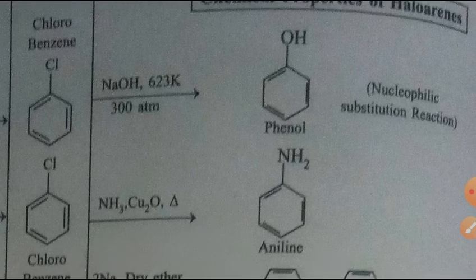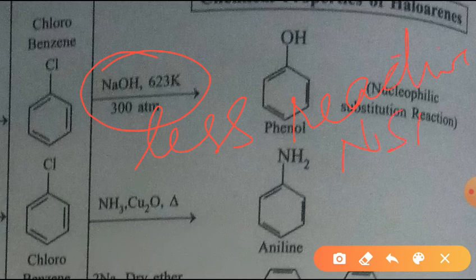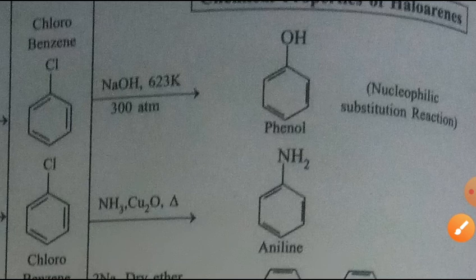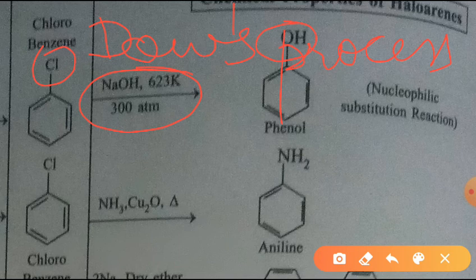Chlorobenzene can undergo nucleophilic substitution reaction but only under drastic conditions. Since chlorobenzene is less reactive toward nucleophilic substitution, due to the partial double bond character of the C–Cl bond caused by resonance, it does not undergo substitution at a faster rate. So we use special conditions of high temperature and pressure: reacting with NaOH at 623 K and 300 atm pressure gives phenol.